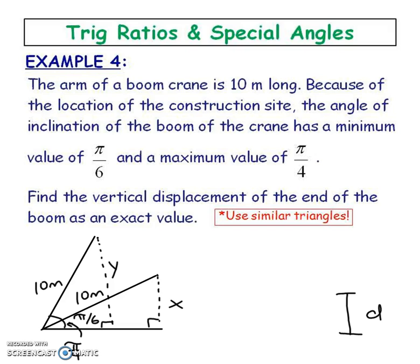So the arm of a boom crane is 10 meters long. What I'll do is start to go through my diagram at the bottom. So this is the boom crane right here at 10 meters. Because of the location of the construction site, the angle of inclination of the boom of the crane has a minimum value of π/6. So what they're saying is that the angle right here is going to be π/6 to the ground, and that's the minimum angle. But it has a maximum angle of π/4. In other words, this crane could then extend higher. Notice that the length of the crane doesn't change. It should still be 10 meters, but the angle might change to a maximum of π/4.